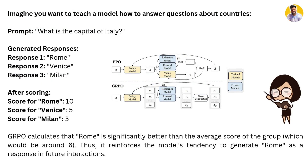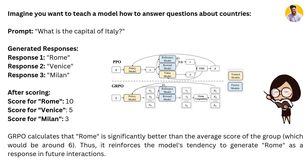For example, given the prompt 'What is the capital of Italy?', the model generates responses: Rome, Venice, and Milan. After scoring each based on correctness, GRPO calculates that Rome is significantly better than the average group score. It then reinforces the model's tendency to generate Rome in future interactions, whereas PPO would use a separate model for that computation — requiring extra computation.